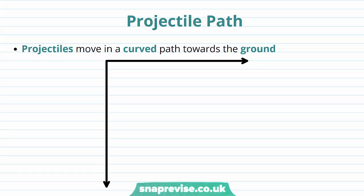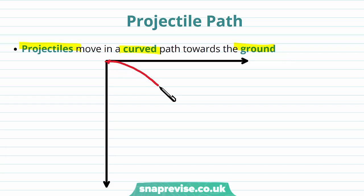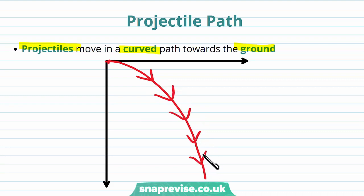So first of all we're going to look at the projectile path. Projectiles move in a curved path towards the ground. So this curved path usually looks something like this, and the object will move along this curved path.